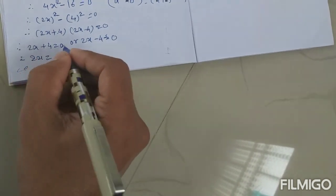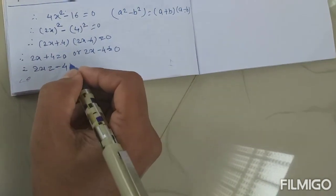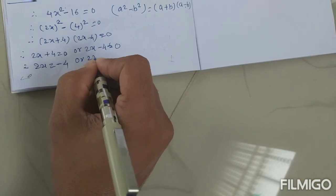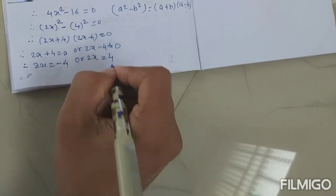So 2x is equal to, this 4 going to that side, minus 4, or 2x is equal to, minus 4 going to that side, plus 4.